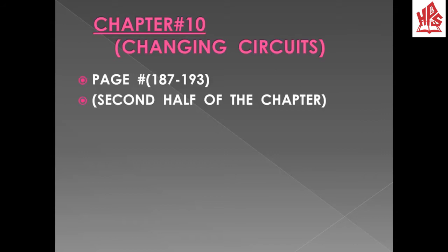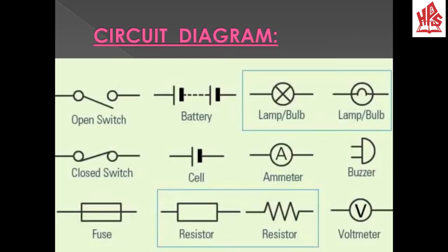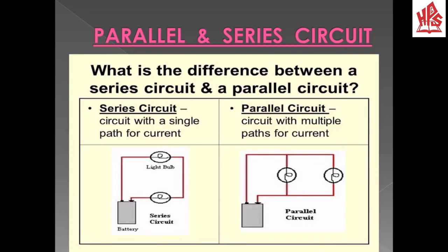This chapter covers page number 187 till 193. In the last tutorial of this chapter we finished up till the topic of circuit diagrams. Just to give a review, circuit diagrams consist of symbols which are used to represent the different parts of an electrical circuit — parallel and series circuits.